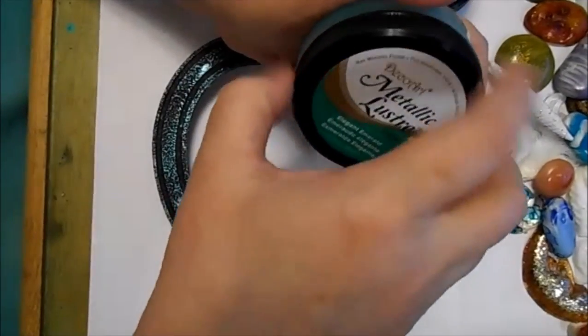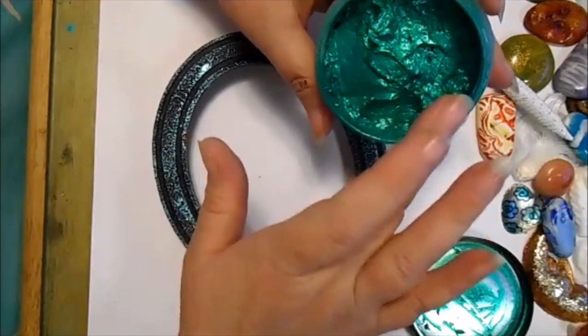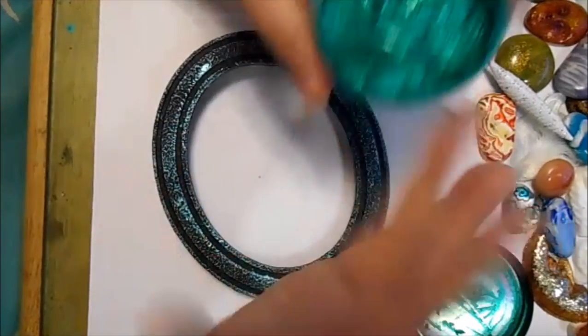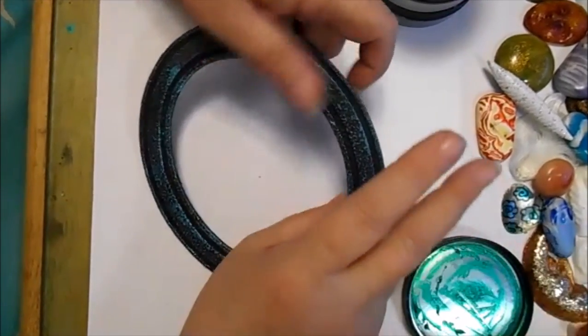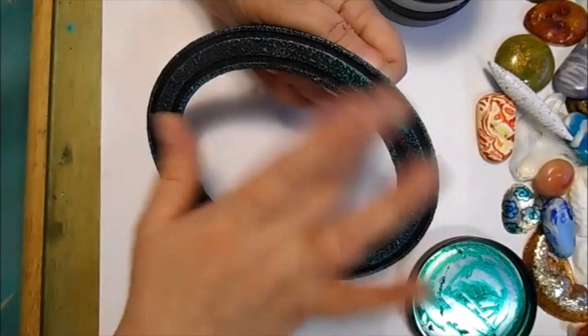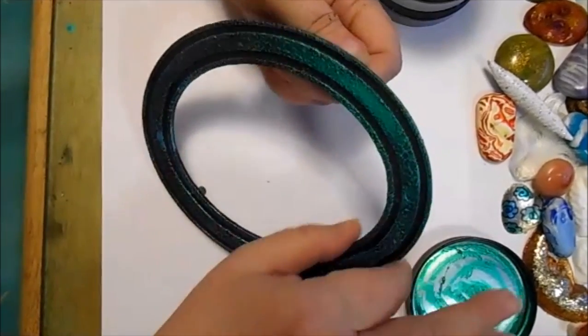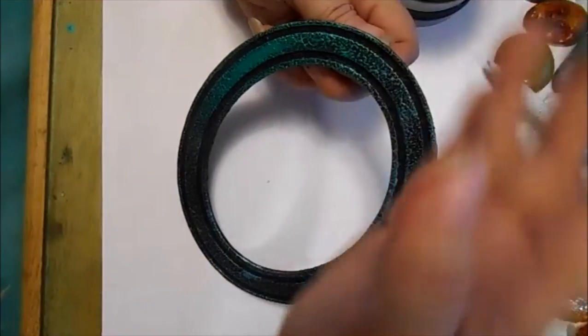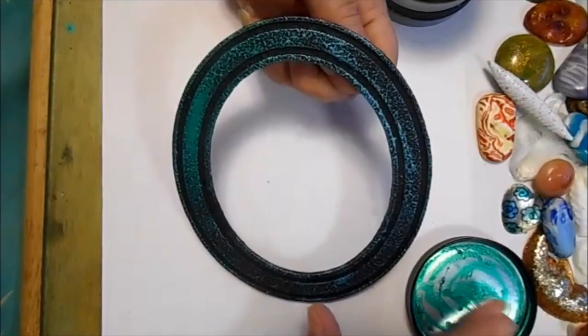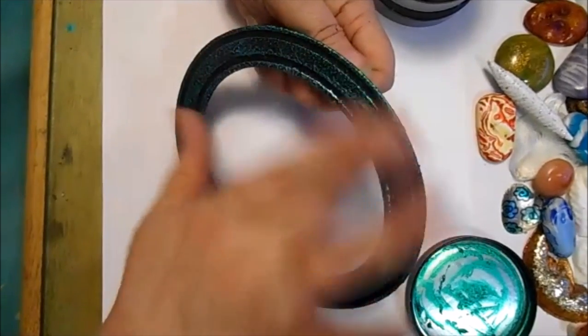I said I was gonna use Inca Gold and then I use the Metallic Luster, go figure. I just ordered these because they seem to be a lot easier for me to find. You can get these at Joann's, I believe you can get the Inca Gold too at Joann's. This green however is quite a bit thinner or runny, almost.